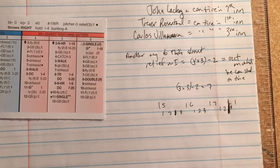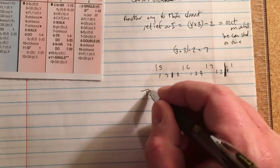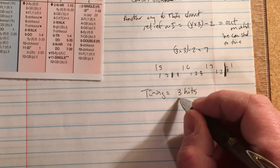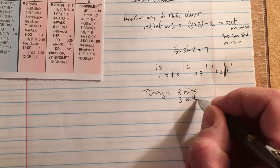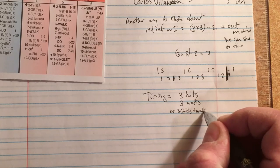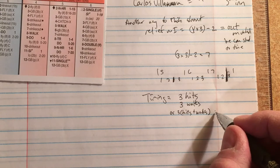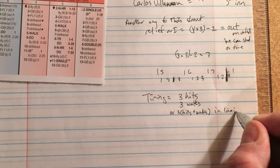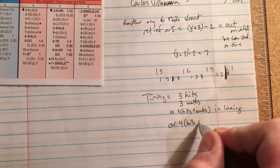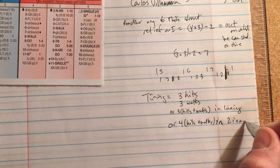From that demarcation point forward, he can tire. So what does tiring mean? Tiring equals: three hits plus walks in one inning, or four hits plus walks in two innings.